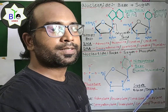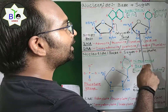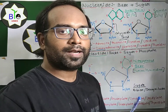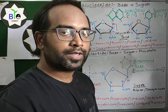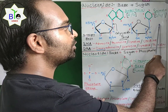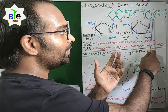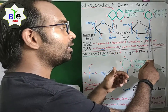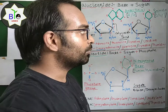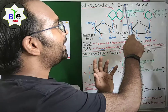Now if the nitrogenous base is a pyrimidine — which includes cytosine, uracil, or thymine — then carbon number one of the pyrimidine base and carbon number one of the sugar are involved in the formation of the glycosidic bond. So that is the structure of a nucleoside, where two things are present: a base and a sugar.